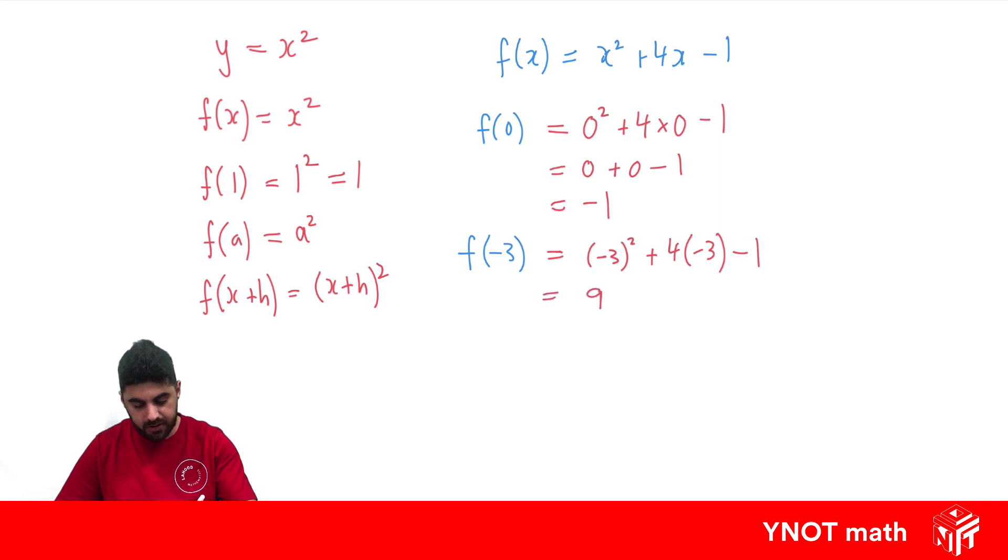Minus 3 squared is 9. 4 times minus 3 is minus 12, minus 1. So I should get minus 4 for this one.